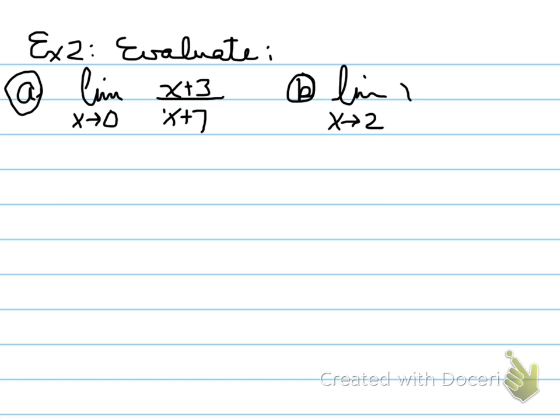Part B, the limit as x approaches two of x cubed minus two x squared plus five. Now note that there is brackets around these values. So just one second, let me put those brackets in for you. And we get the value of, there, much better. So we're taking limit as x approaches two of that whole entire function.